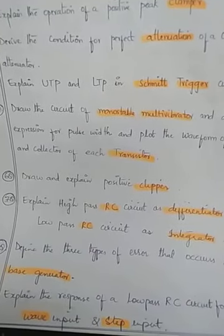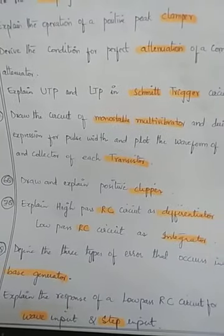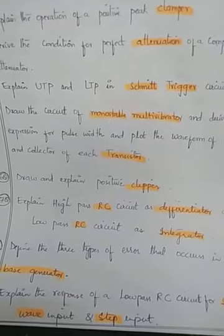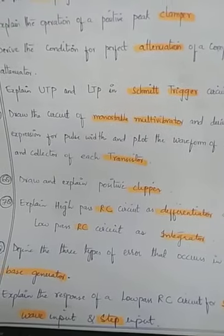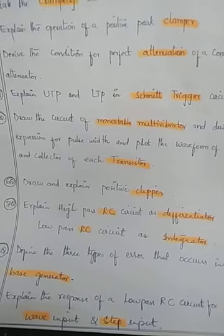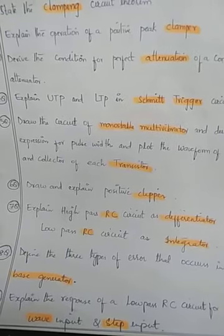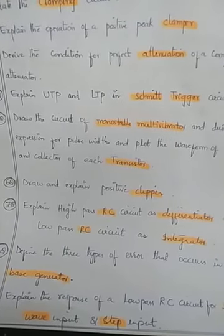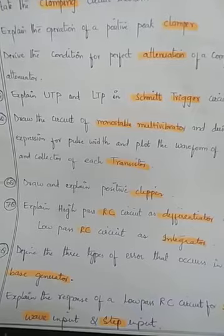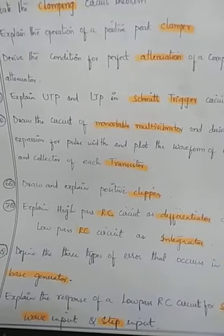The next question is: draw and explain the positive clipper. For clipper and clamper circuits, you can practice all variations — they may ask about negative clipper, positive reference, negative reference — all the clippers. Go through all of them.